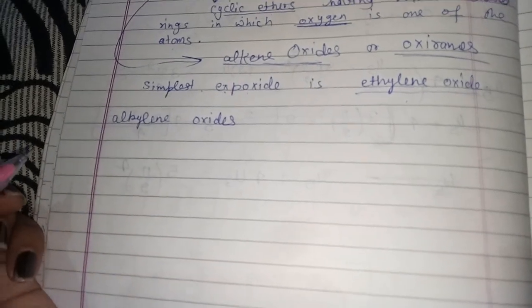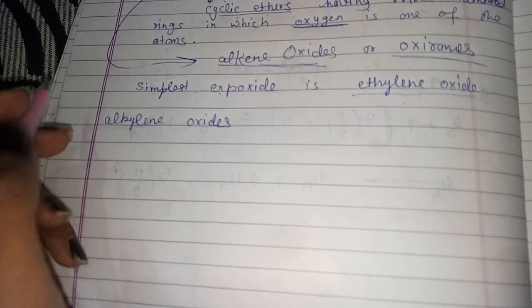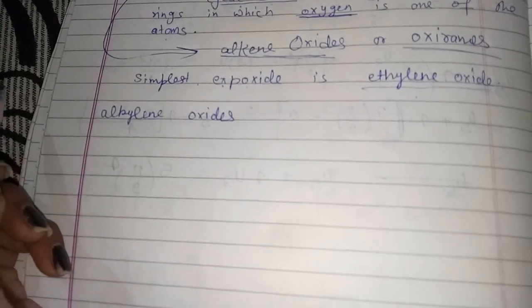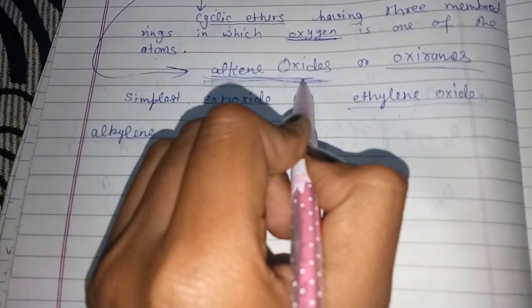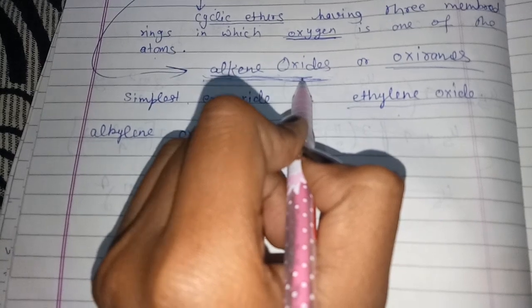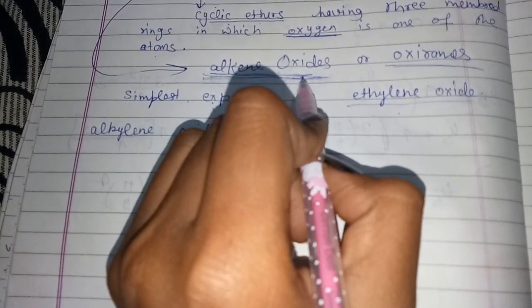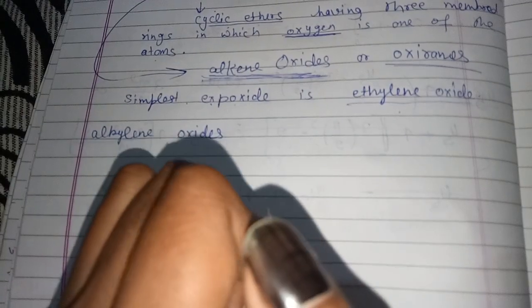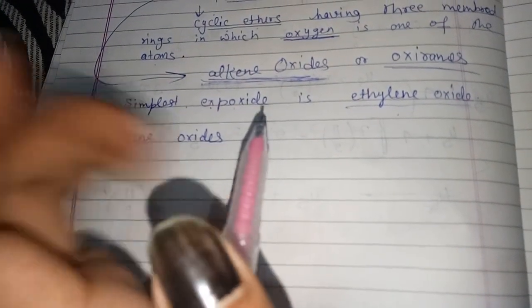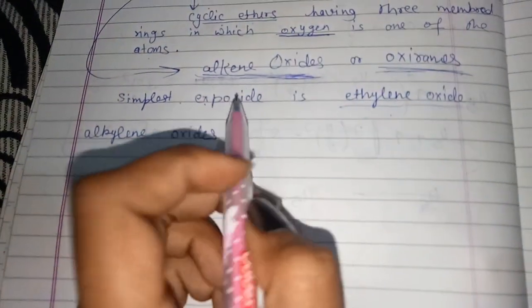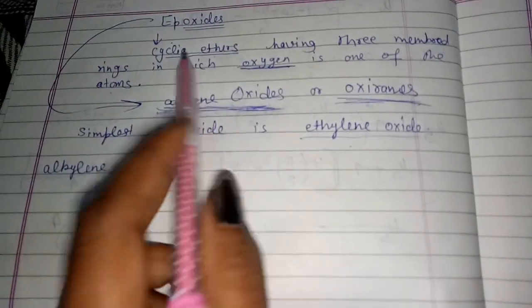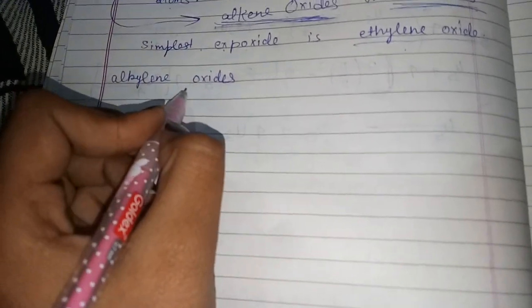In the IUPAC system, epoxides are named as alkene oxides, and they can also be called epoxy alkanes and oxiranes. These are the two IUPAC names of epoxides.